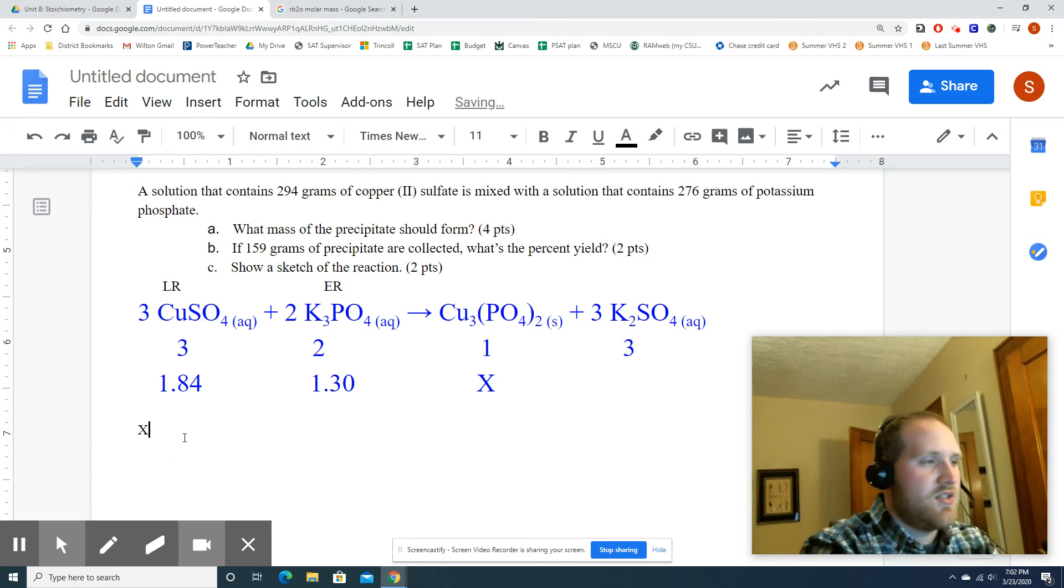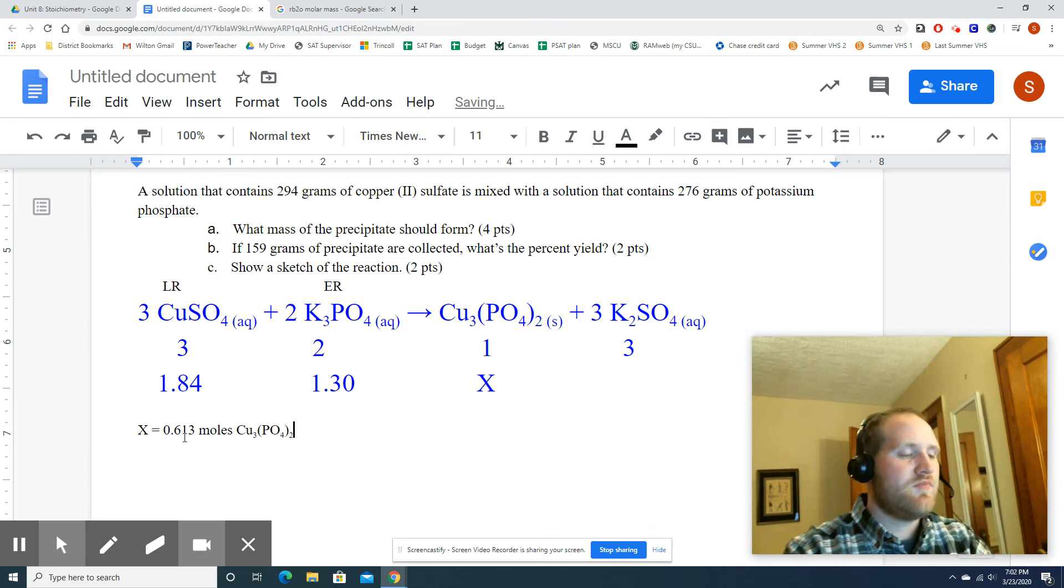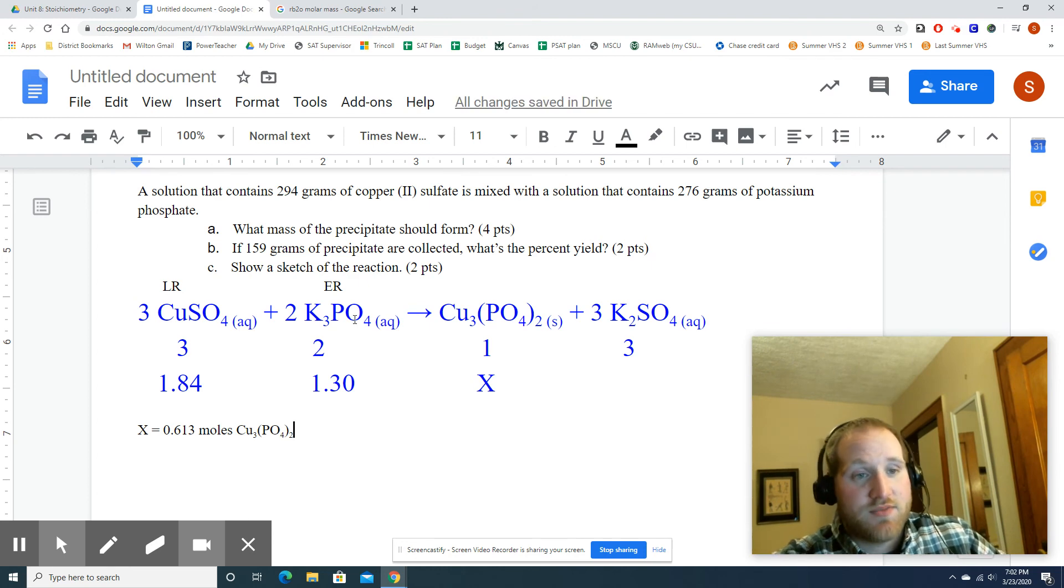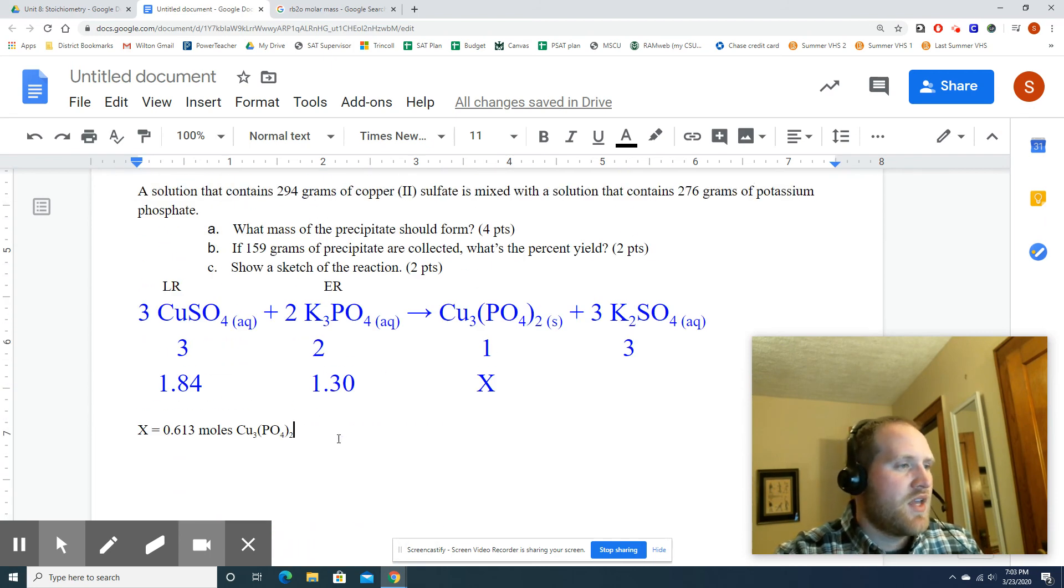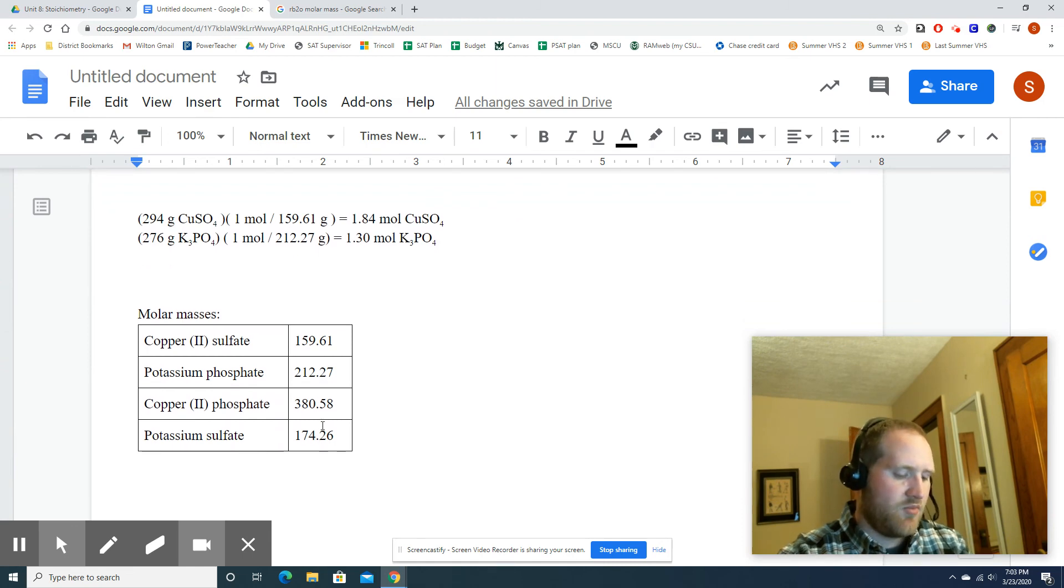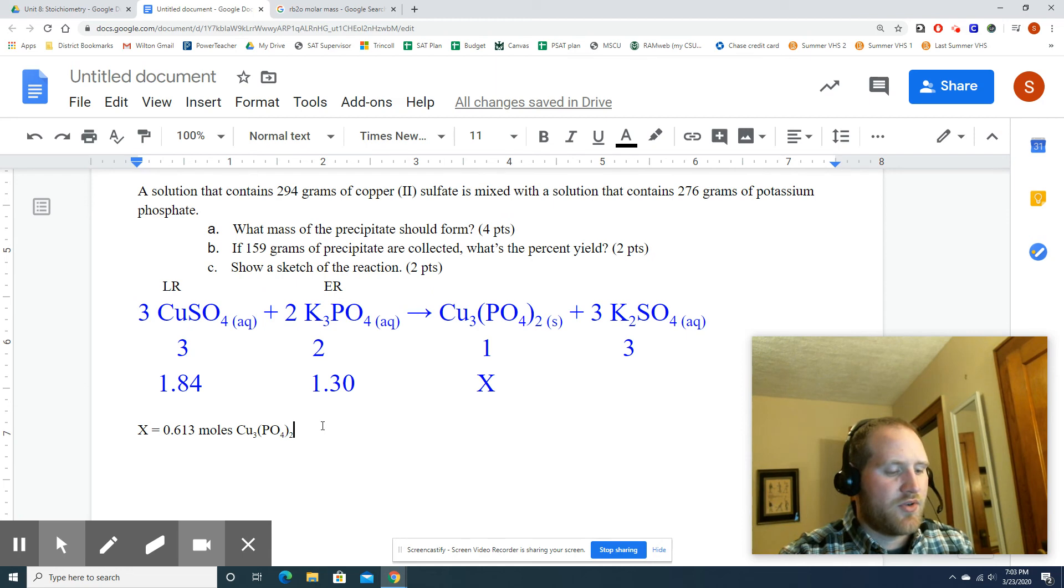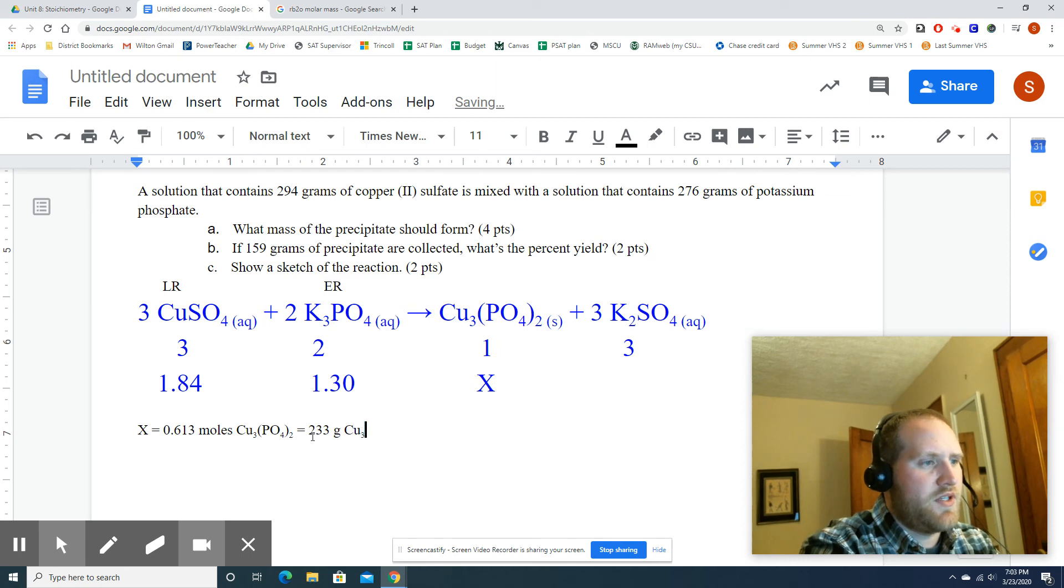So it's going to be 0.613, and that's going to be X. Now what unit is that? Moles. So X equals 0.613 moles of Cu3(PO4)2. But the problem doesn't ask for moles, it asks for mass. So we're going to take our molar mass of Cu3(PO4)2, which I've already gotten here, 380.58. I'm going to multiply 0.613 times 380.58, which gives me 233 with three sig figs. So that's my answer for A.